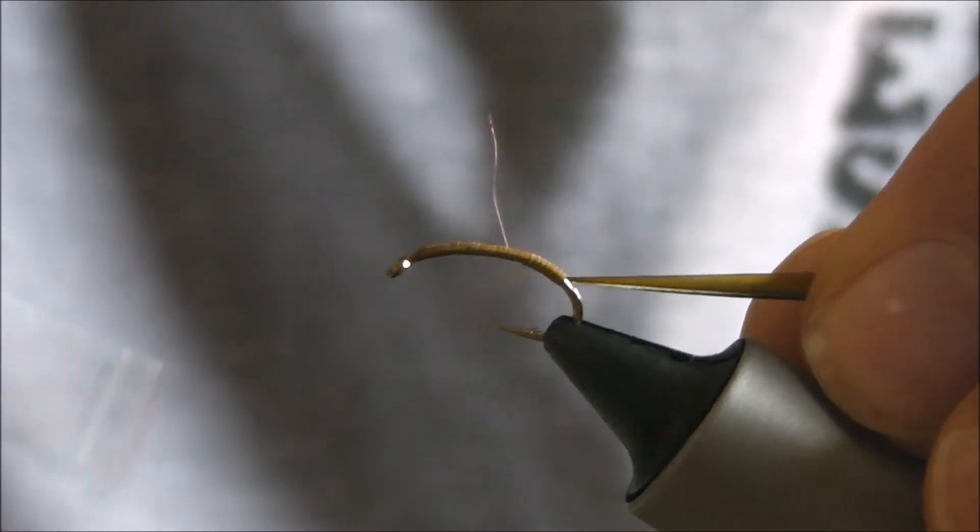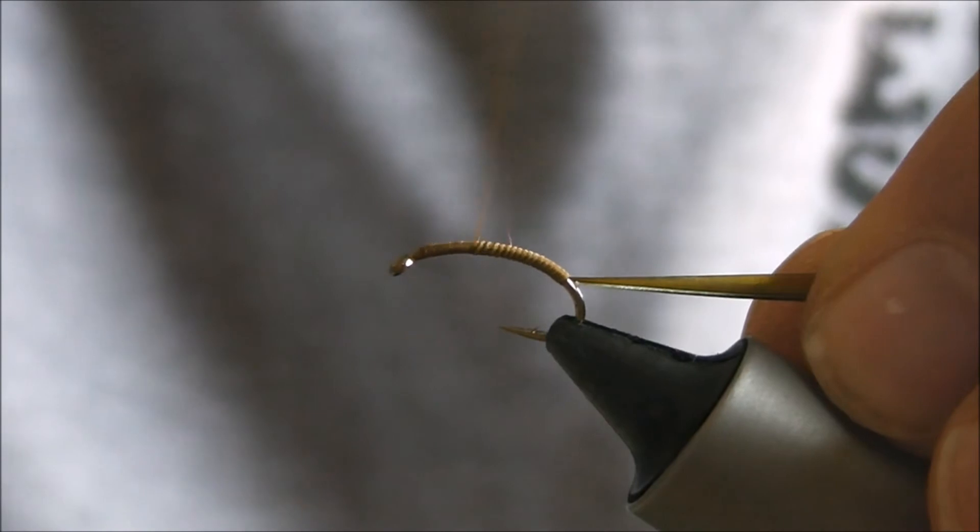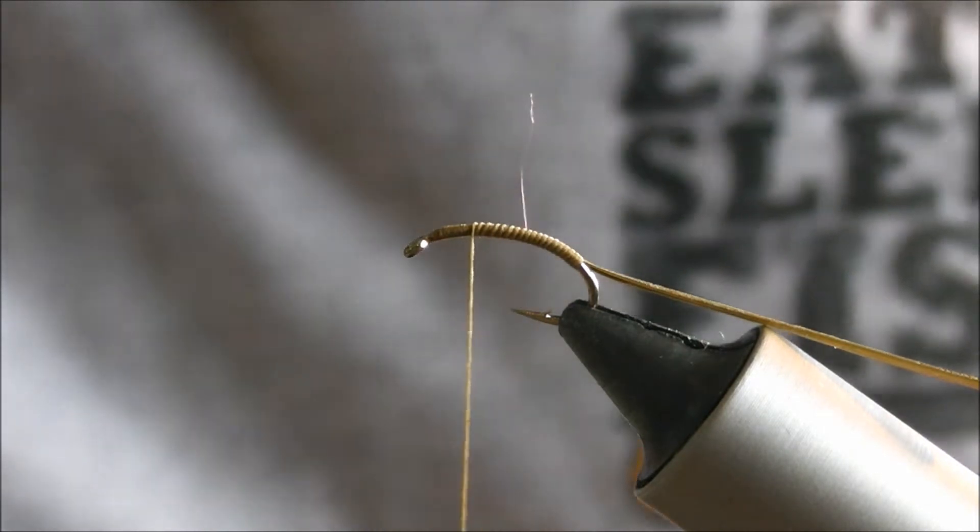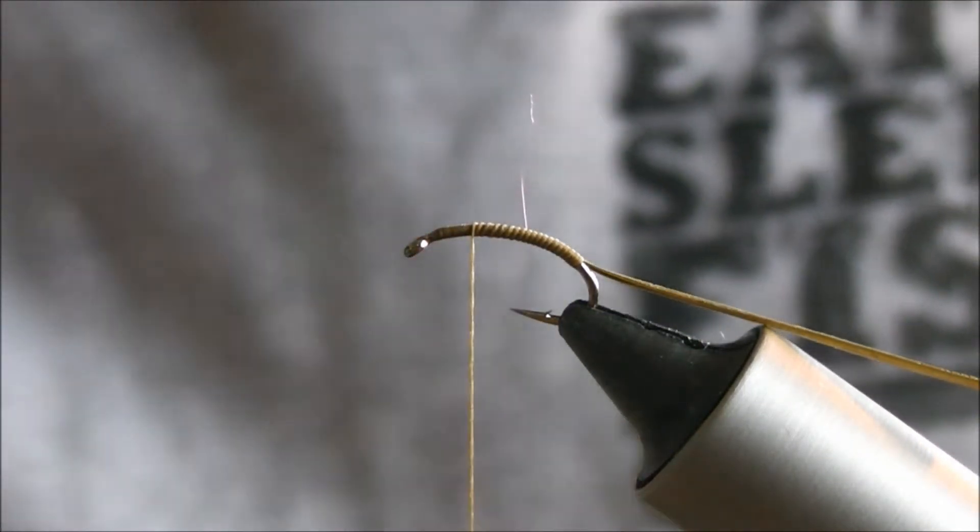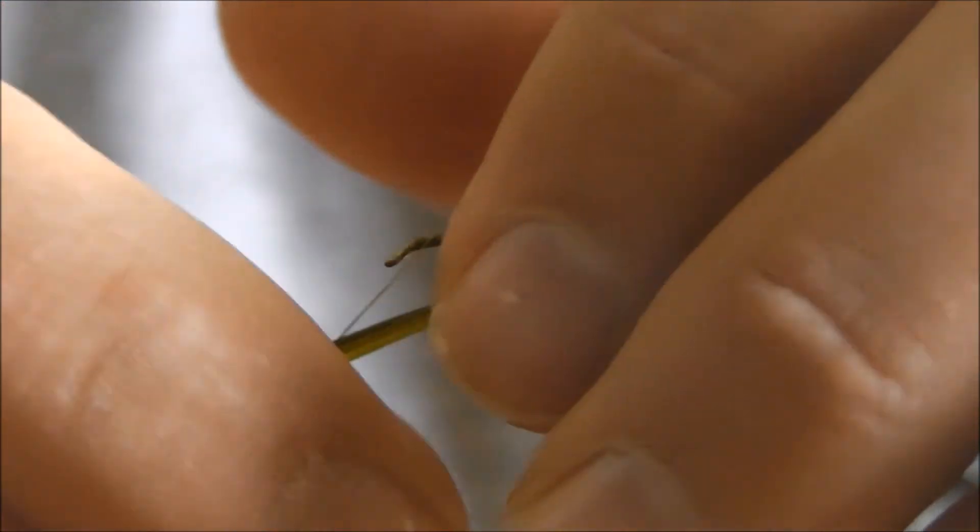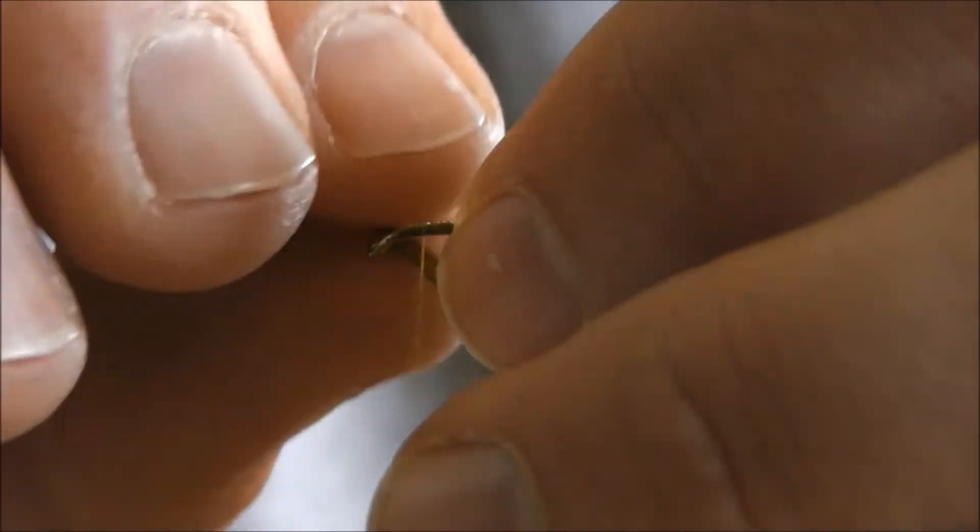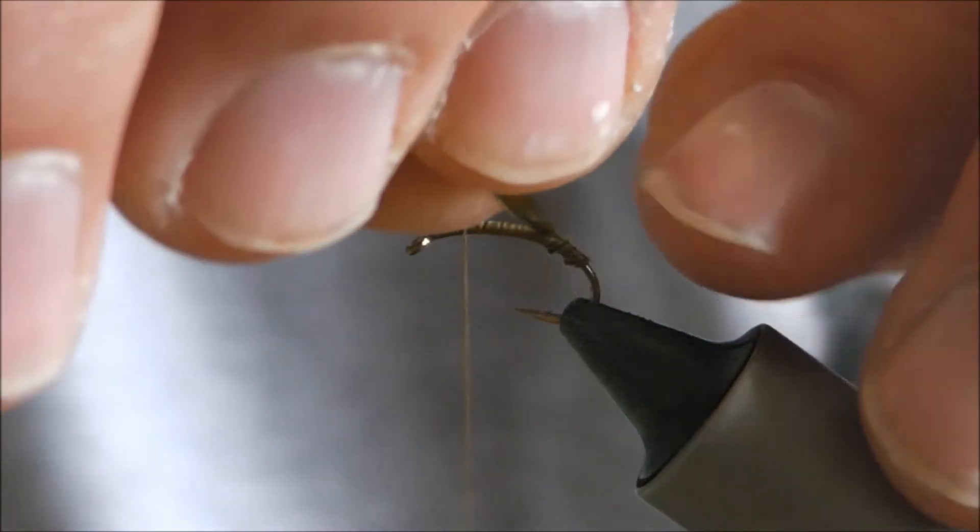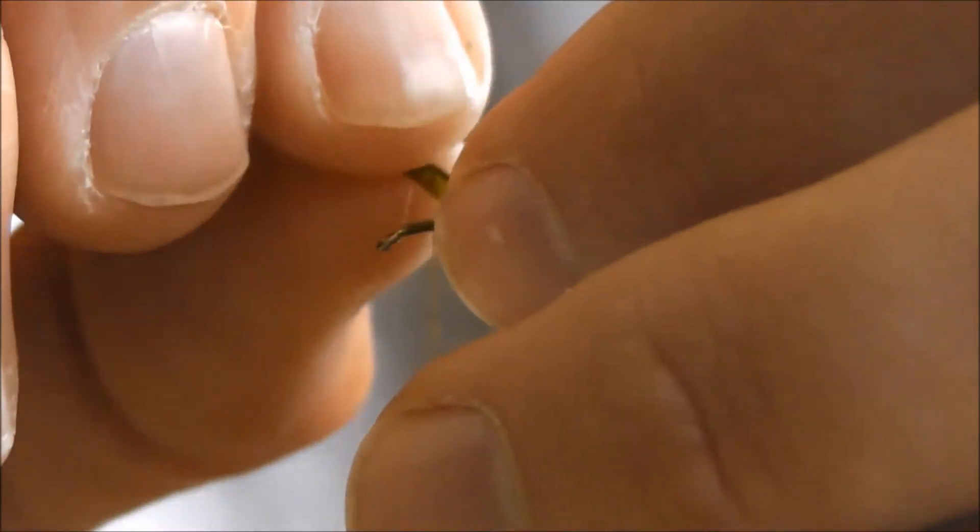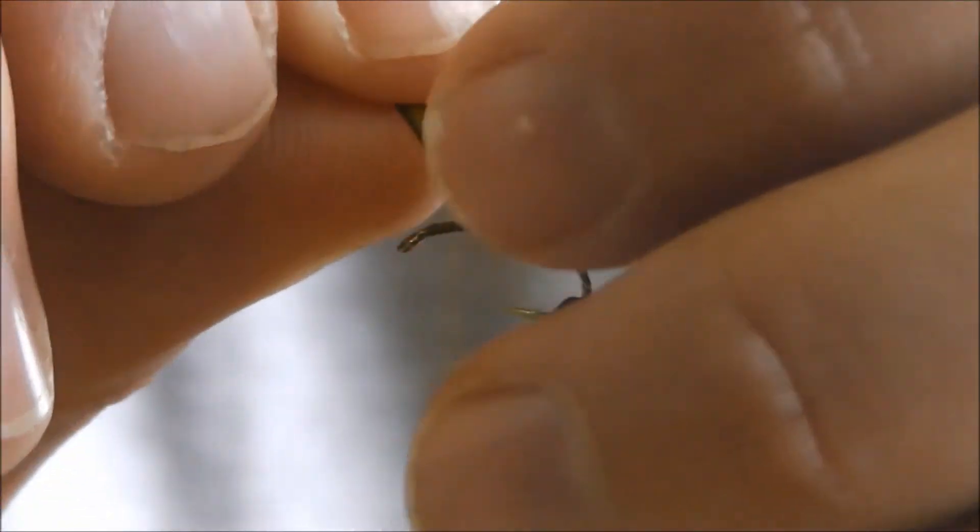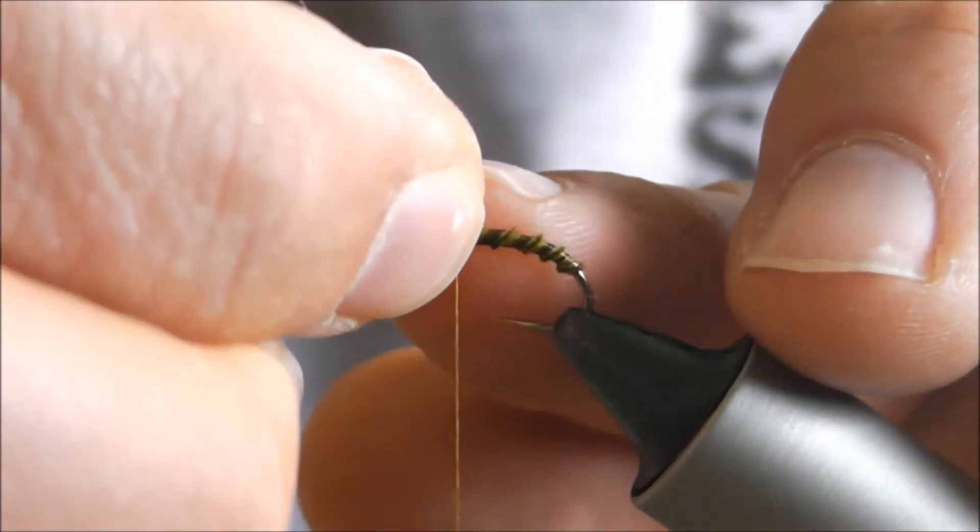And then back up in touching turns to about three or four mil behind the eye. You can do this with hackle pliers but they do kind of get in the way. Because it's such a short material you've got to be a bit careful, but just wrap it up towards the eye. You'll see when you wrap this has got a little ridge on one side of the feather which gives it a really nice segmented body effect.